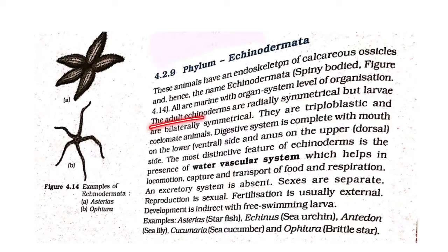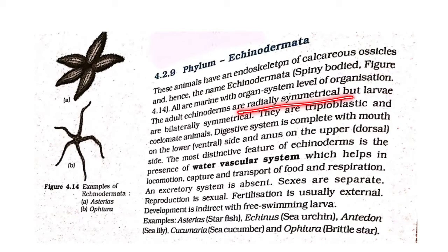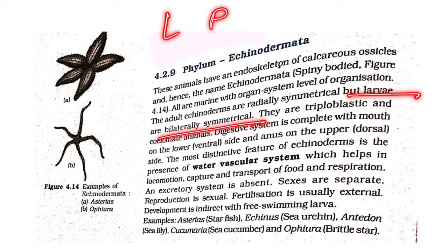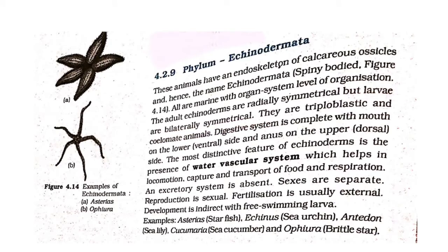The adult echinoderms are radially symmetrical, but the larvae are bilaterally symmetrical. They are triploblastic, with ectoderm, mesoderm, and endoderm.